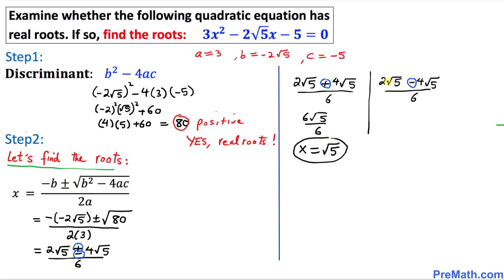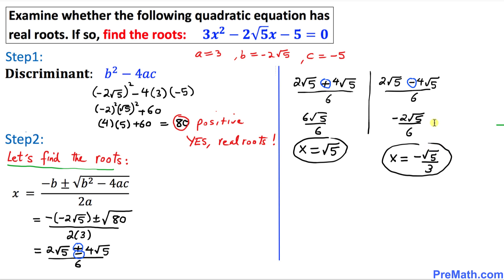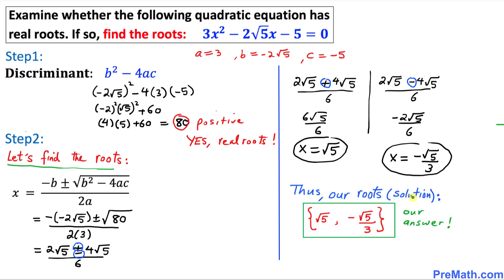On the other side, using the minus sign: 2 square root of 5 minus 4 square root of 5 gives negative 2 square root of 5, divided by 6. We can reduce this: x equals negative square root of 5 divided by 3. This is the other solution. So our roots, or solution set, are x equals square root of 5 and x equals negative square root of 5 over 3. Thanks for watching and please don't forget to subscribe to my channel for more exciting videos. Bye!